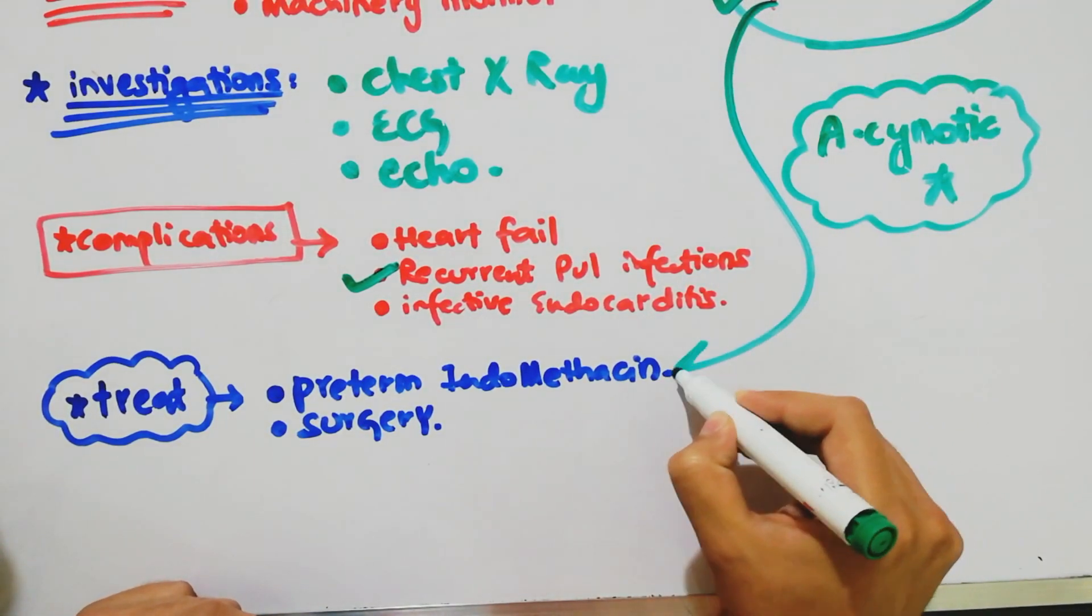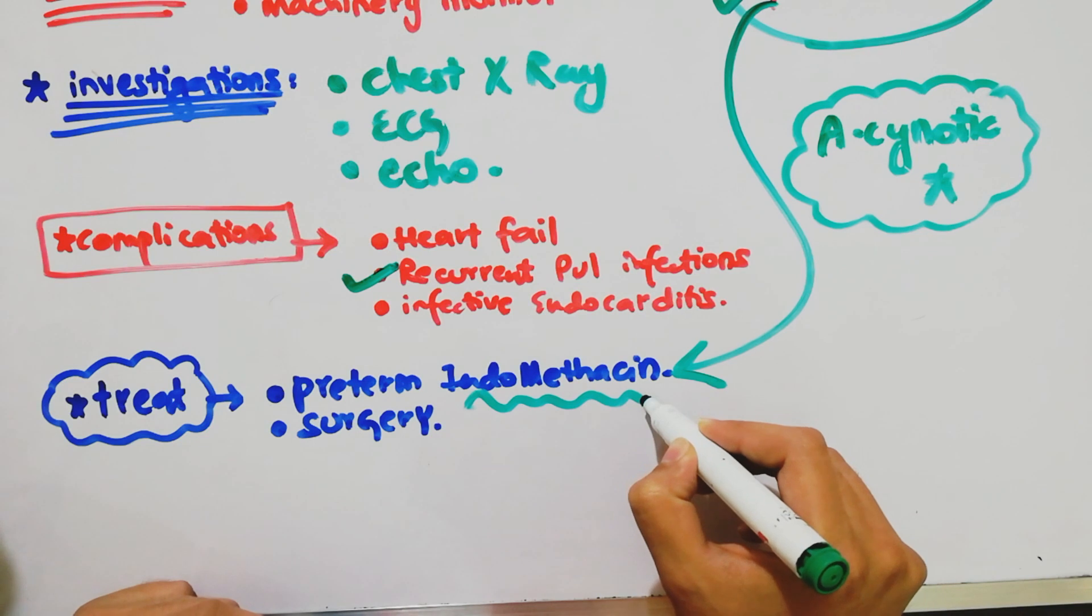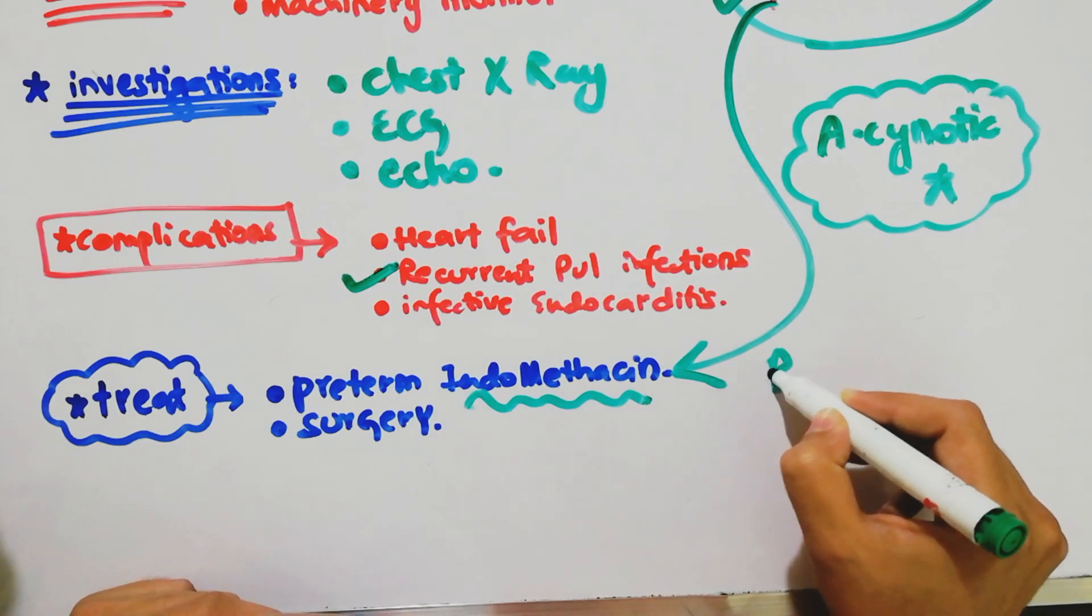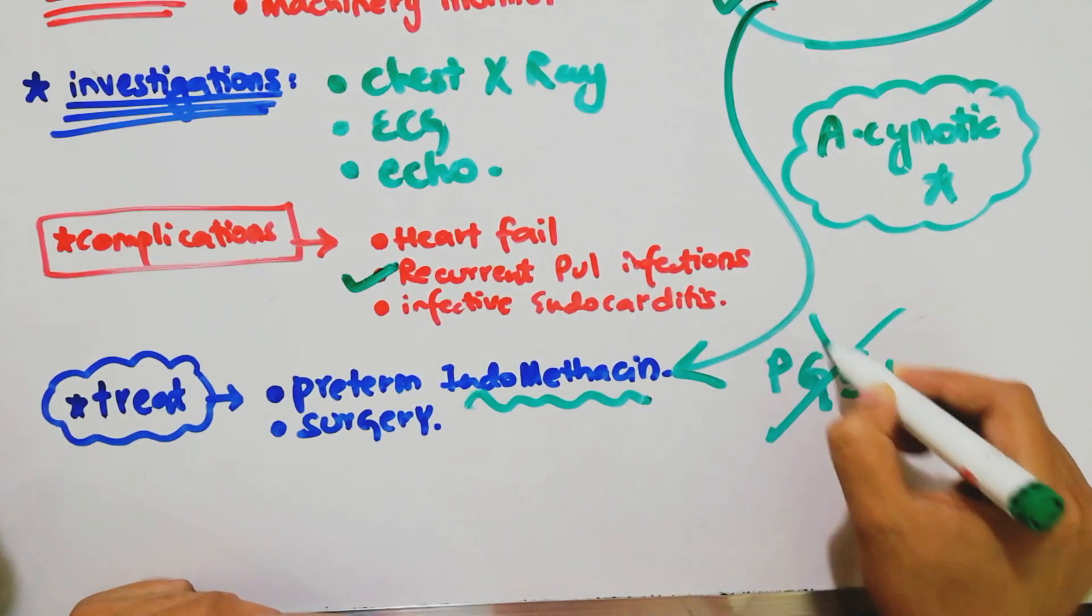For premature patients, we will give indomethacin IV infusion. Indomethacin is a prostaglandin E1 blocker.